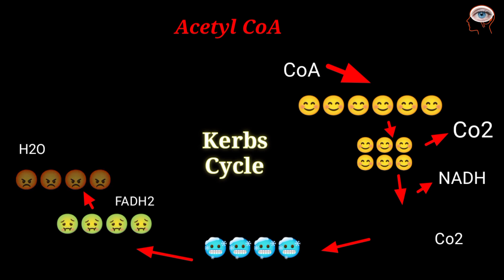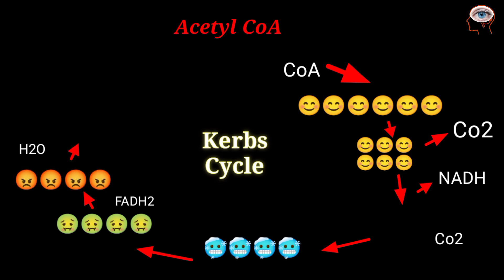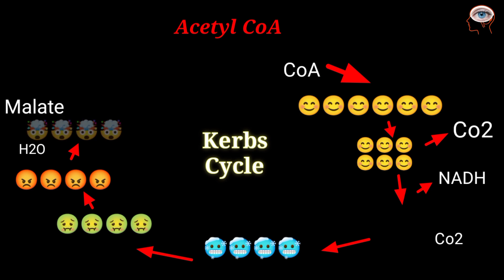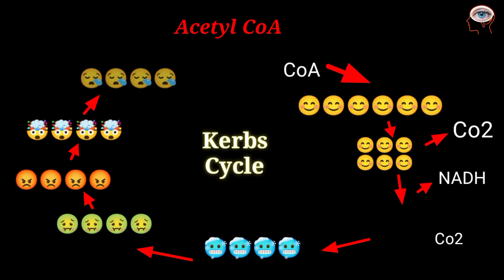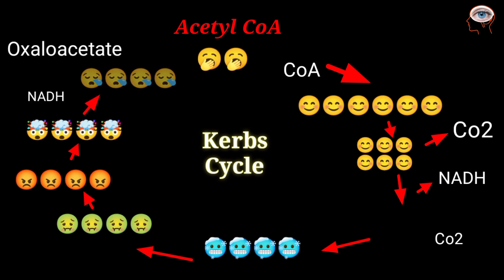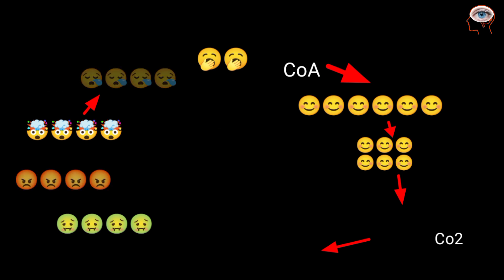In the seventh step, water is added to fumarate and it is converted into the 4-carbon compound malate. In the final step, malate is oxidized and regenerates the original 4-carbon compound, oxaloacetate, and another molecule of NADH is produced.